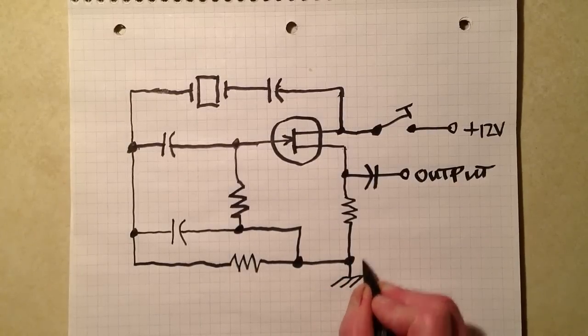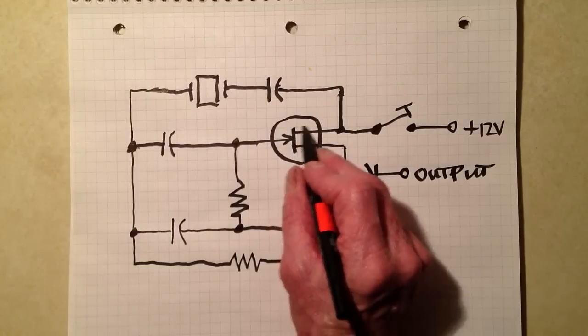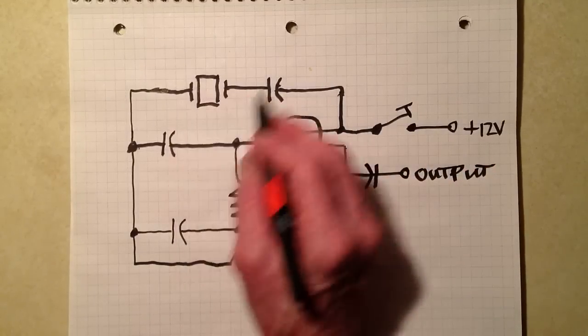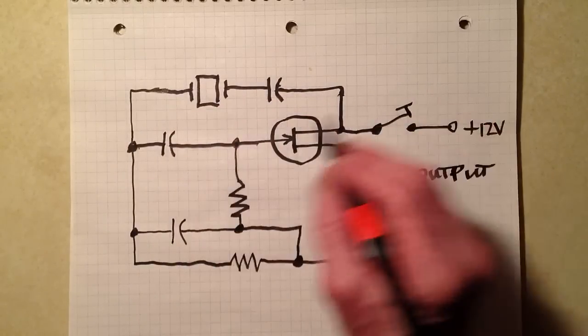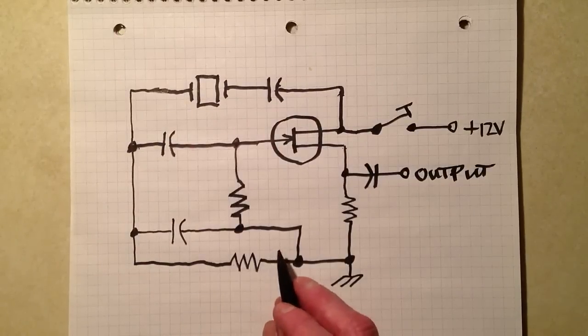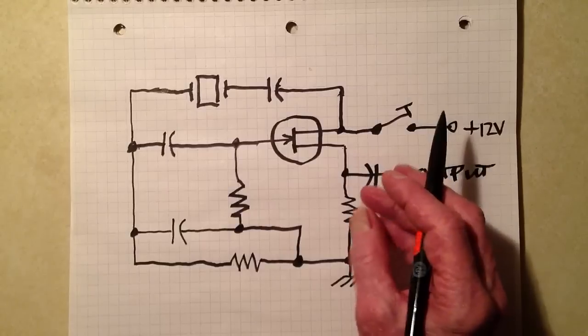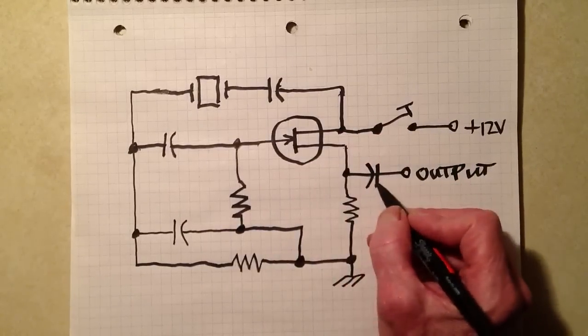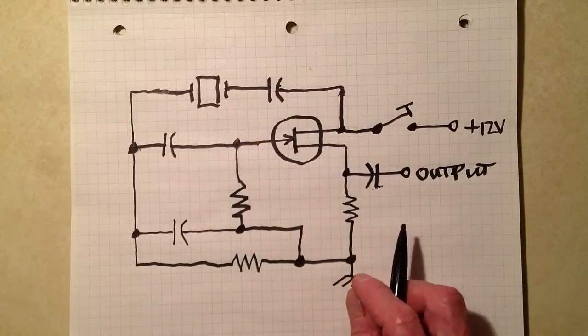So, the current, the electron current, flows from chassis ground into the source and out the drain. Then, once this thing starts oscillating because of this feedback here, you close the key, this thing should start oscillating right away. That, in effect, produces an RF carrier signal that can get through this blocking capacitor and go on to the buffer.